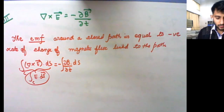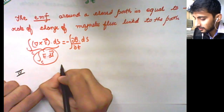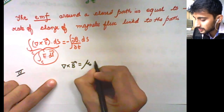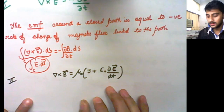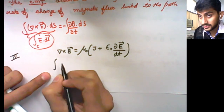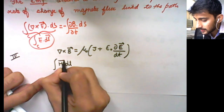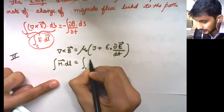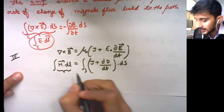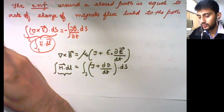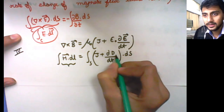Now we will move on to the fourth Maxwell equation and give an interpretation. In differential form: del cross B equals mu naught J plus epsilon naught del E by del T. In integral form you will get H dot dL equals the surface integral of J plus del D by del T dot dS.